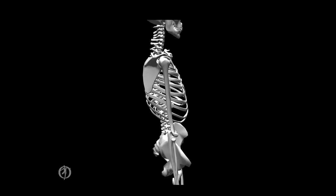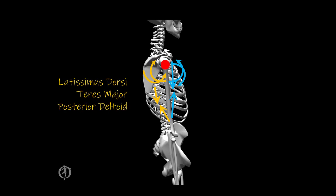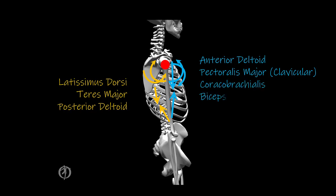Now let's move on to the glenohumeral joint. In the sagittal plane, the glenohumeral joint has a medial-lateral axis that goes through the humeral head. Any MTCs that have a force vector that is posterior to this axis of rotation will create a torque that will extend the glenohumeral joint, while any MTCs that have a force vector that are anterior to this axis of rotation will create a torque that will flex the glenohumeral joint. MTCs that will extend the glenohumeral joint include the latissimus dorsi, the teres major, and the posterior deltoid, while those that will flex the glenohumeral joint include the anterior deltoid, the clavicular portion of the pectoralis major, the coracobrachialis, and the biceps brachii.